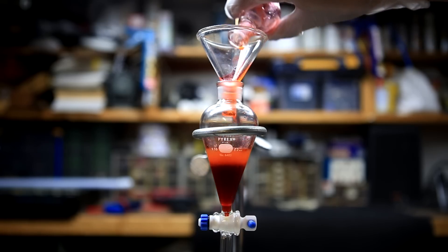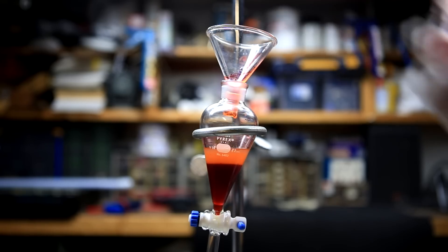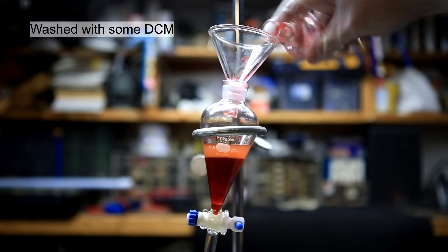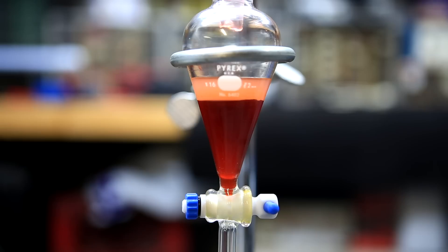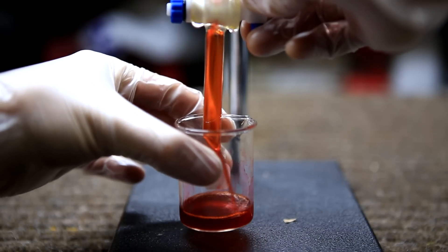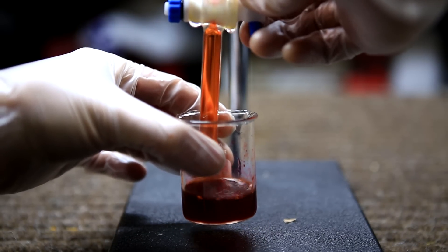This mixture was then transferred to a small separatory funnel. The round bottom flask was washed with a couple ml of DCM. The contents were mixed thoroughly and then the layers were allowed to separate. The lower layer containing our desired product phenolphthalein is drained into a beaker.